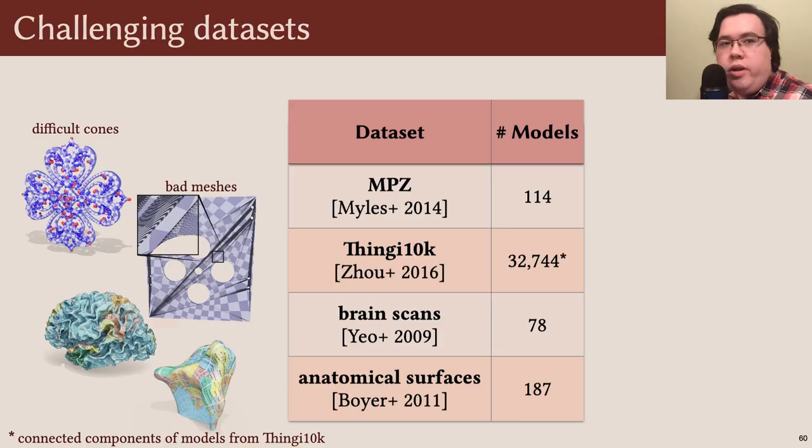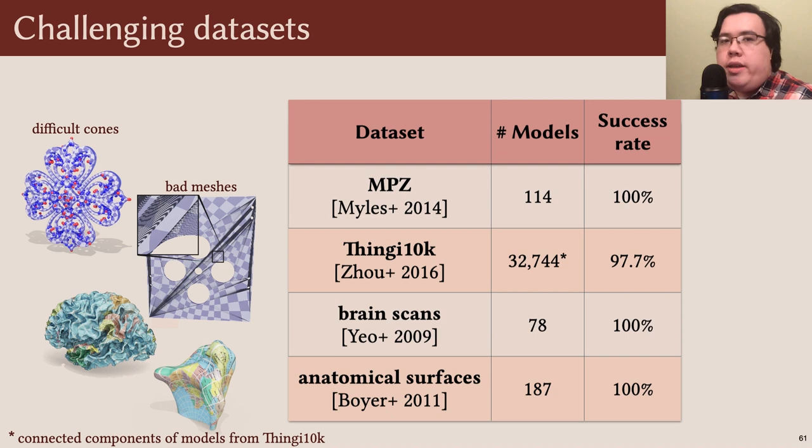Now, some results. We evaluated our algorithm on several challenging datasets. We tested cone flattening on MPZ and Thingy10k, and spherical uniformization on brain scans and other anatomical surfaces. We successfully produced locally-injective discrete conformal maps on all models, with the exception of Thingy10k, where we achieved a 97.7% success rate due to floating-point issues on a few of the most degenerate models.